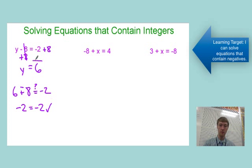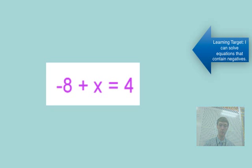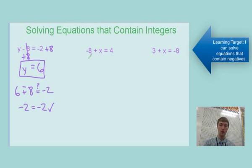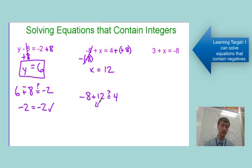Pause the video and try this next one: negative 8 plus x equals 4. For this one, the opposite of addition is to subtract, but pay close attention to what we're subtracting. We're not subtracting 8, we're subtracting negative 8. Subtracting a negative—we're getting less negative, which means more positive. 4 plus 8 is 12. Now plug in 12 for x. We have negative 8 plus 12, and we're going to see if that equals 4. Those are different signs working against each other, and negative 8 plus 12 does equal 4.